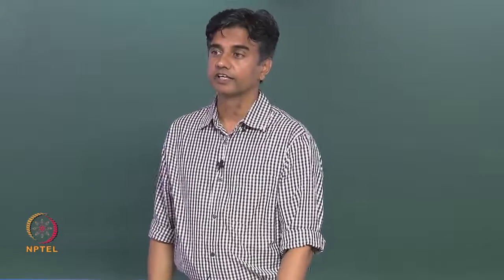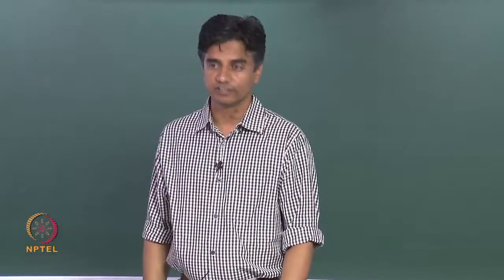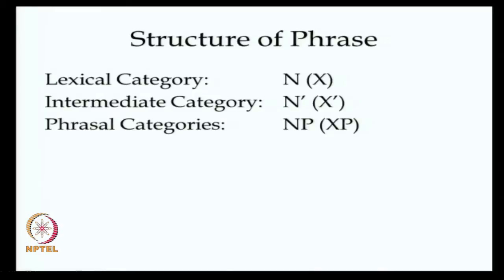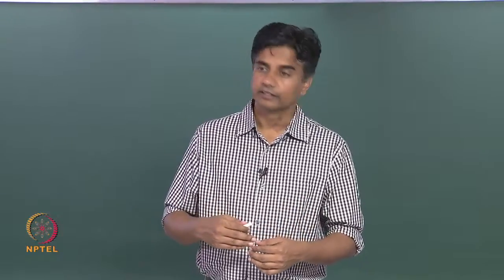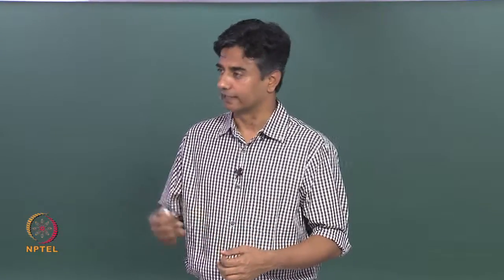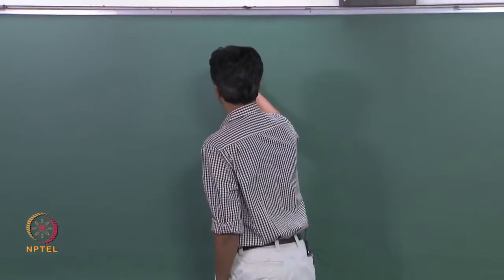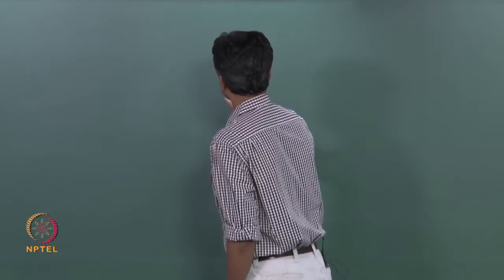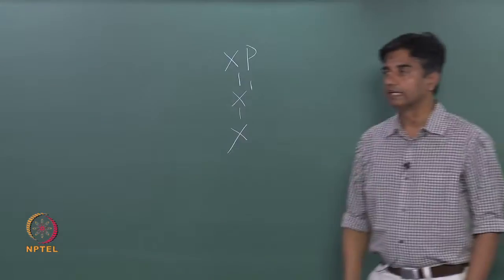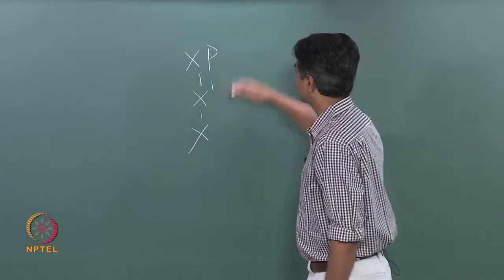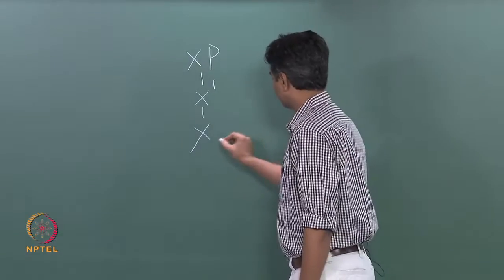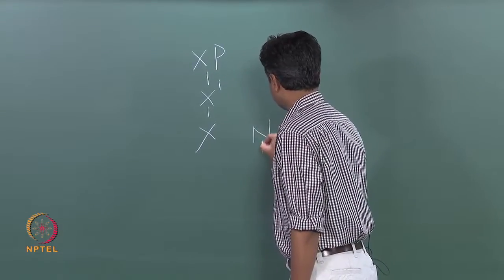We will continue with phrase structure and the complement and adjunct distinction. Quickly reviewing from yesterday, we have looked at three aspects of a category — three layers: the lexical layer, the intermediate layer, and the phrasal layer. All phrases are going to have these layers, and each category — noun, verb, adjectives, and preposition — will follow this system.